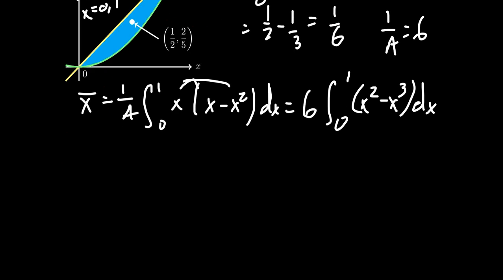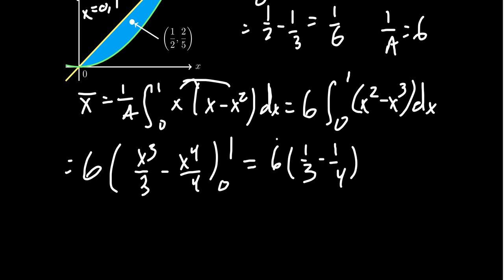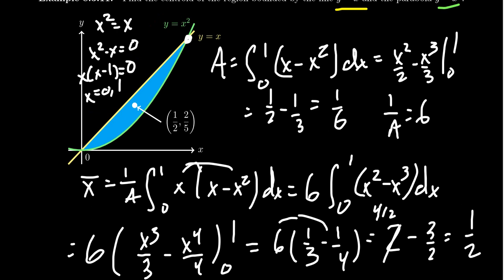And so integrating that thing, we end up with 6 times, we're going to get x cubed over 3 minus x to the 4th over 4 as we go from 0 to 1. Plug it in 0, make everything disappear. Plug it in 1, we're going to get 6 times a third minus a fourth. If you distribute the 6 through, you end up with 2 minus 3 halves. So we're going to write this as 4 halves. And so we get a 1 half when we're done. So that's going to be the x-coordinate of the center, which we can see in the diagram like so.